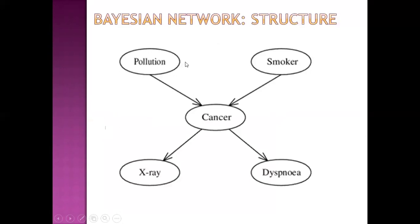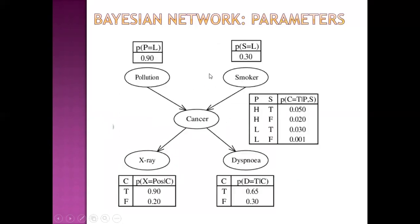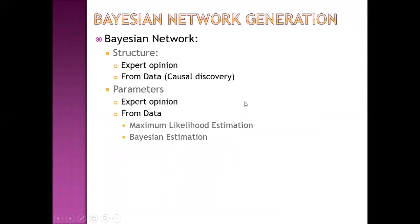This is the structure of a Bayesian network as we have seen before — it has nodes and edges. This is the Bayesian network with marginal probabilities and conditional probabilities.